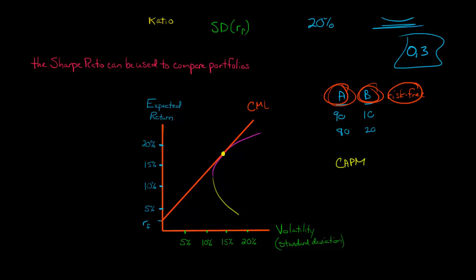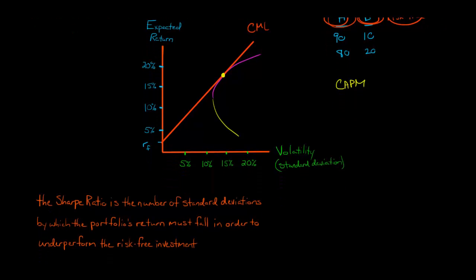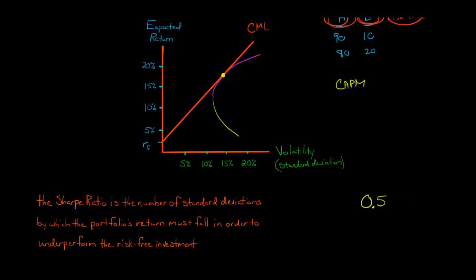Rational investors say they're getting the most reward per unit of risk from this portfolio. You can also think about the Sharpe Ratio as the number of standard deviations by which the portfolio's return would need to fall in order for the portfolio to actually underperform the risk-free investment. So when we calculated the Sharpe Ratio of 0.5, that means the portfolio return would have to fall by 0.5 standard deviations in order for that portfolio to underperform the risk-free investment.